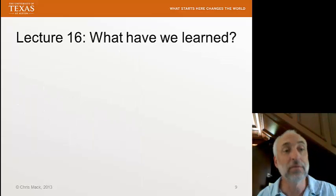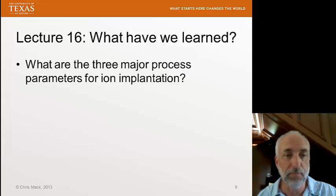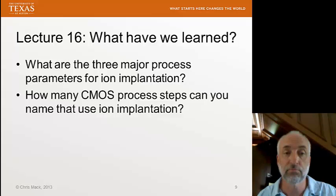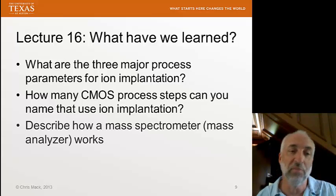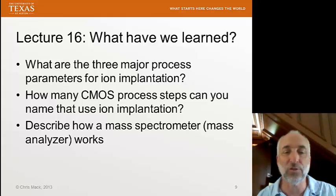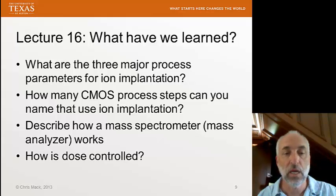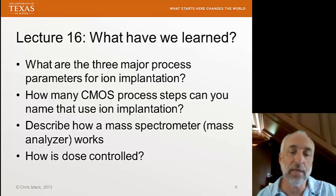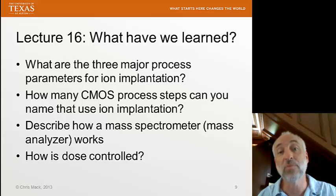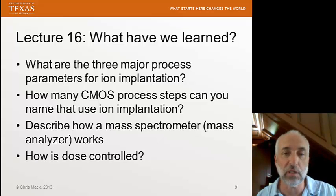That's my introductory discussion of ion implantation. You should be able to answer these questions: What are the three major process parameters for ion implantation? How many CMOS process steps can you name that use ion implantation? Describe how a mass spectrometer, or mass analyzer, works. And finally, how is dose controlled — define dose and tell me how dose is controlled in ion implantation. Next time we'll look more closely at the implant process and see what happens to these ions when they smash into a silicon wafer.